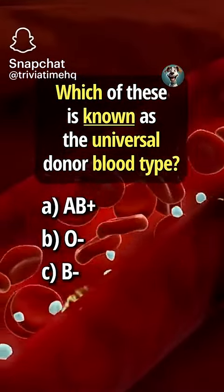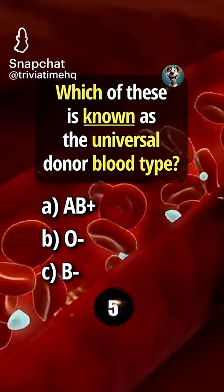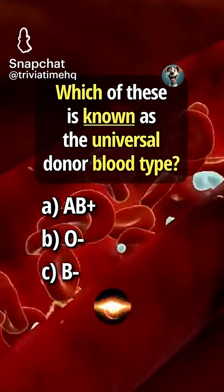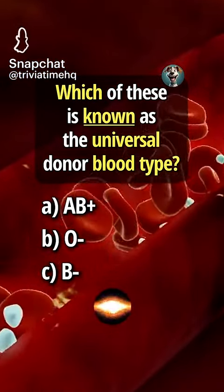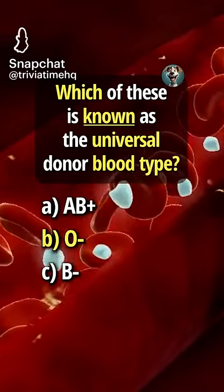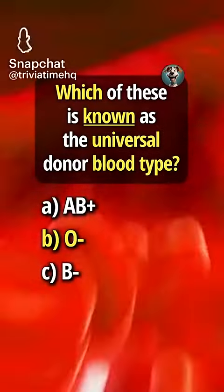Which of these is known as the universal donor blood type? Answer B, type O negative.